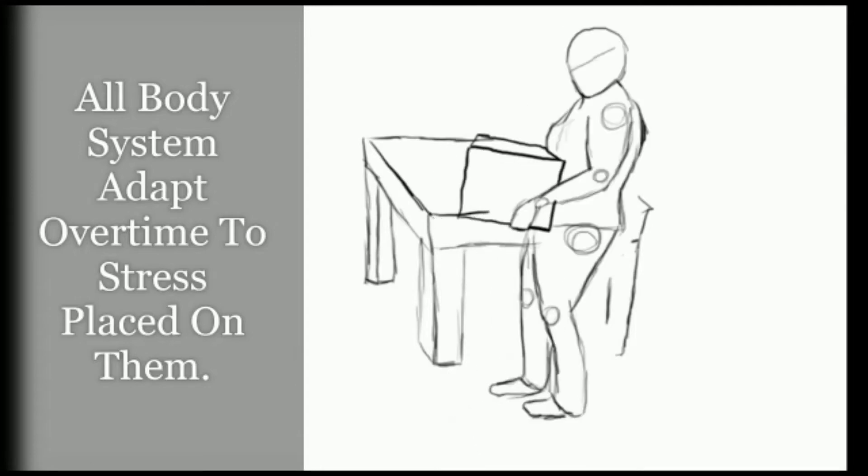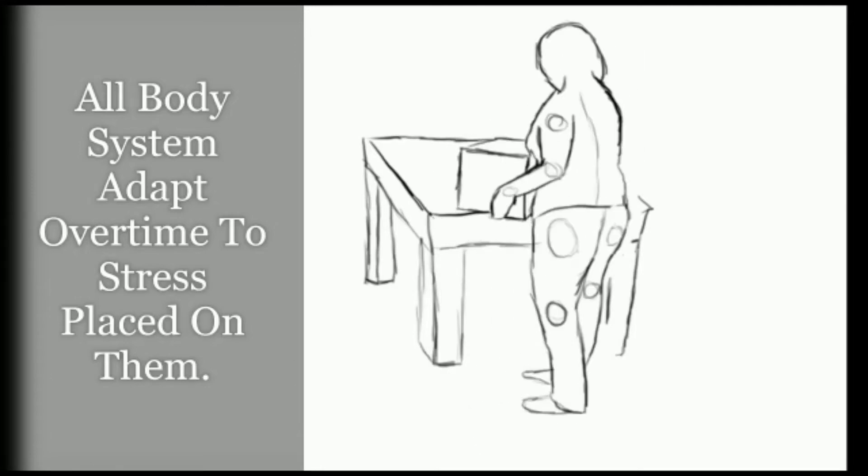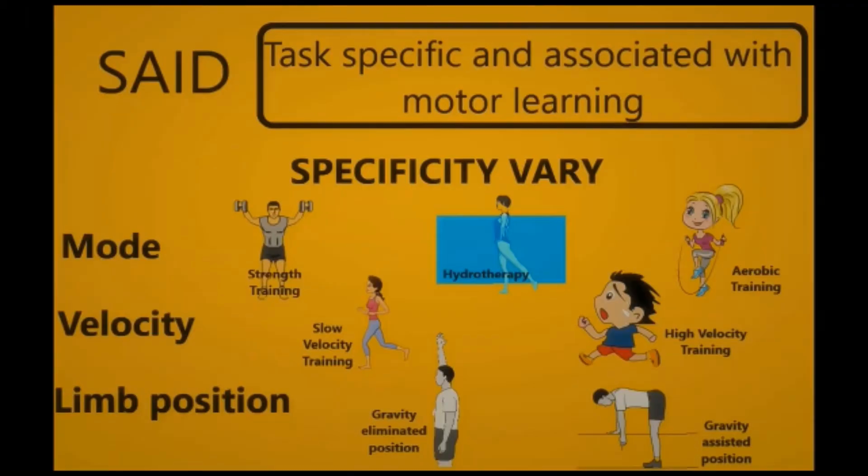Now, how is motor learning based on the SAID principle? We have three parameters. For the mode, it could be either strength training or aerobic training. For velocity, we have slow velocity training and high velocity training.